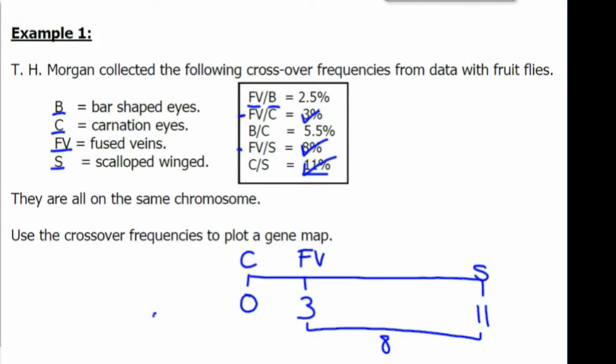Now we'll look at B and C. B is 5.5% away from C. And we'll check. Is that also 2.5% away from FV? Yes, it is. So the distance or the genes on our chromosome are C, FV, B, and then S.